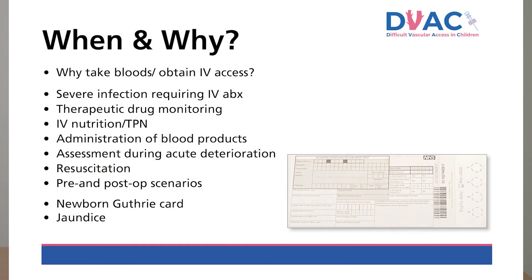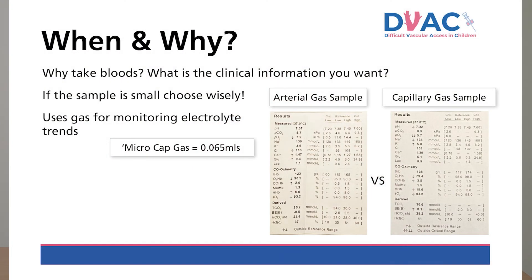The best bang for your buck is the capillary blood gas. It is a vein saving technique and a micro sample only requires 0.065 of a mil. It provides information on acid base, ventilation, perfusion as well as electrolytes. They are also incredibly useful for establishing clinical trends. Arterial sampling is classically used in high dependency or intensive care patient settings, and capillary gases are the next best thing. These two examples show that fundamentally, arterial and capillary gases provide the same clinical information.